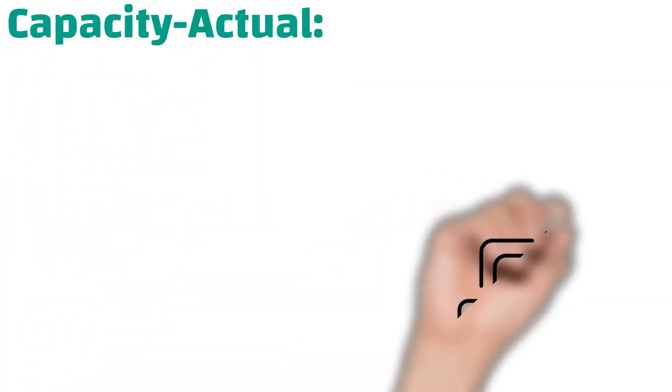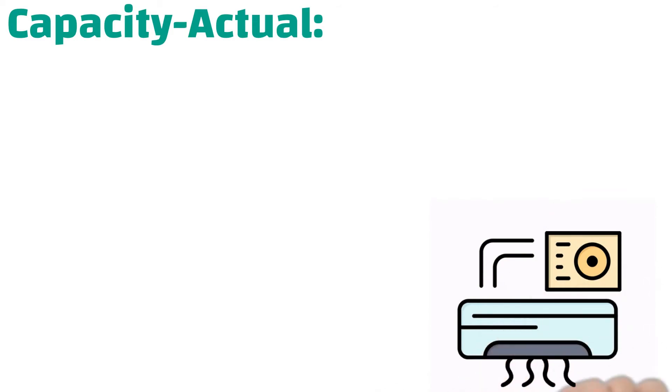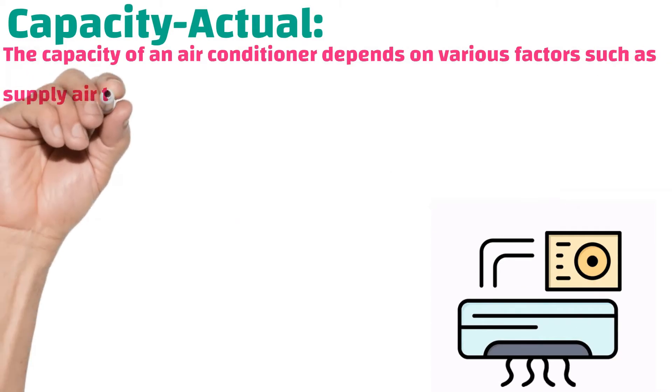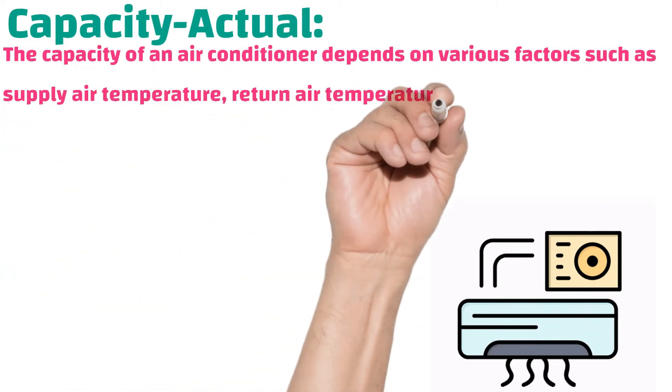What is actual capacity? The capacity of an air conditioner depends on various factors such as supply air temperature, return air temperature, and outdoor ambient air temperature.